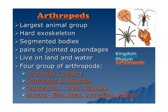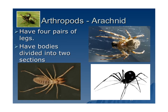Insects include flies, bees, butterflies, and beetles. They're all in the kingdom animalia with the phylum arthropoda. The arachnids are arthropods — 'arachnid' is the word for spider. They have four pairs of legs, so eight legs. Their bodies are divided into two sections. It's very important that you remember their bodies are in two sections, unlike the insects.